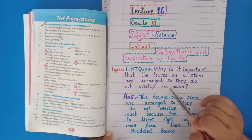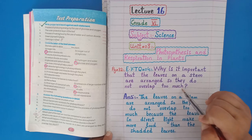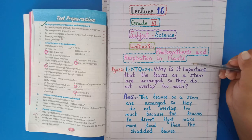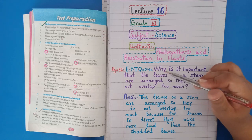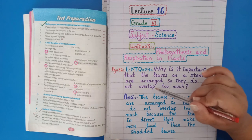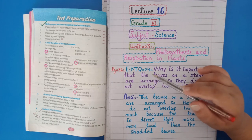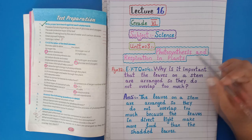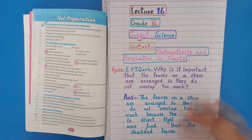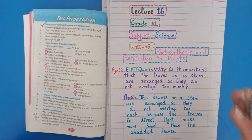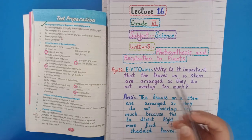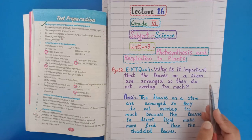یہ کیوں اہم ہے، کیوں ضروری ہے کہ stem پہ جو leaves arrange ہوئے ہوتے ہیں وہ ترتیب میں arrange ہوں — ایک دوسرے کے ساتھ overlap نہ ہوں۔ Overlap مطلب کوئی ایک leaf جو ہے وہ دوسرے کو ڈھانپ نہ دے، ایک leaf دوسرے کے اوپر نہ ہو۔